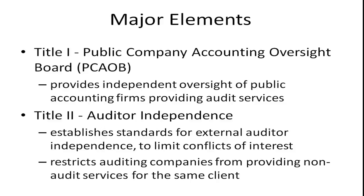Title 2 deals with auditor independence. It establishes standards for external auditor independence to limit conflicts of interest, specifically restricting auditing companies from providing non-audit services for the same client. Up to this point, it was very common for an auditing firm to also provide lucrative consulting services to the same company. Even if different people were involved, there's a conflict of interest — if your firm is taking in millions in consulting fees, there's pressure on auditors to rubber-stamp whatever management reports, rather than checking for mistakes or fraud.